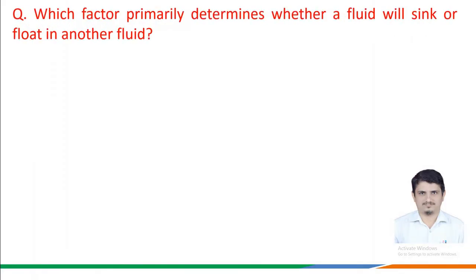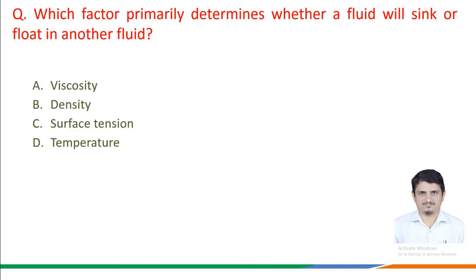Which factor primarily determines whether a fluid will sink or float in another fluid? The options given are: A. Viscosity, B. Density, C. Surface tension, D. Temperature.